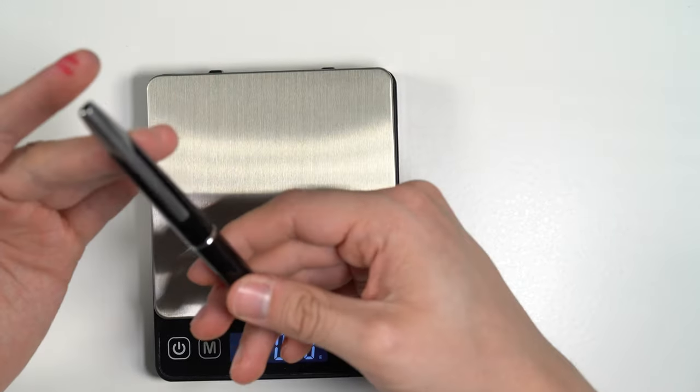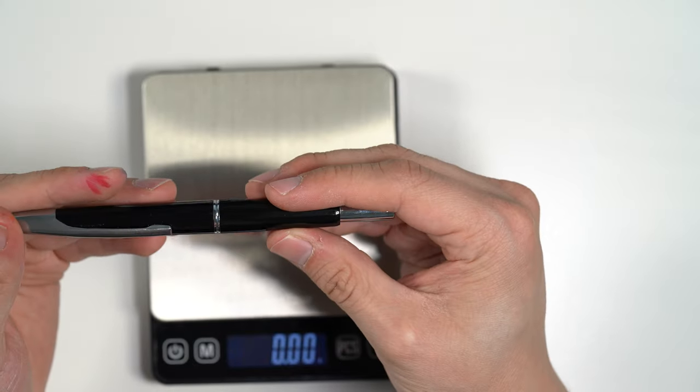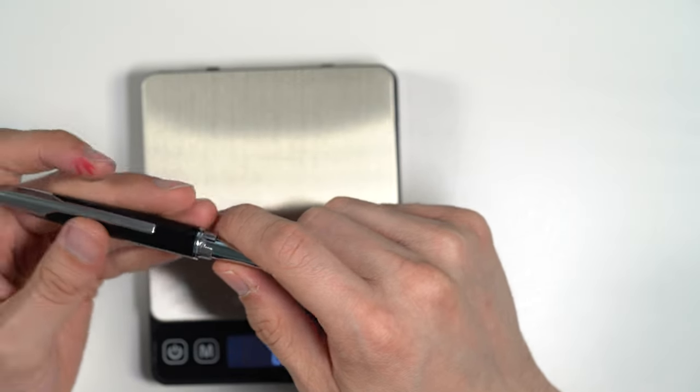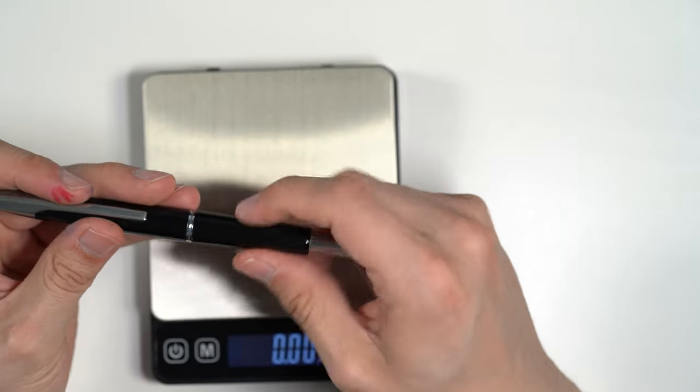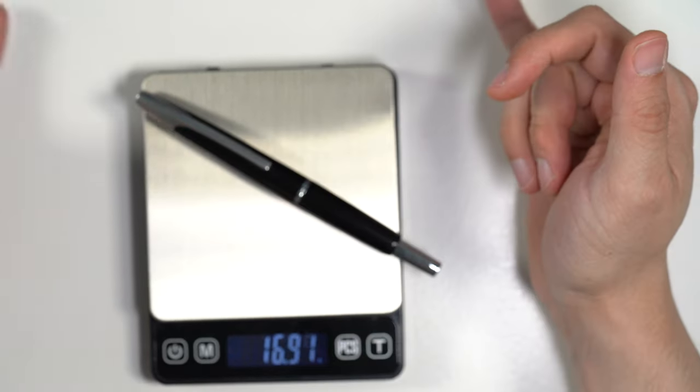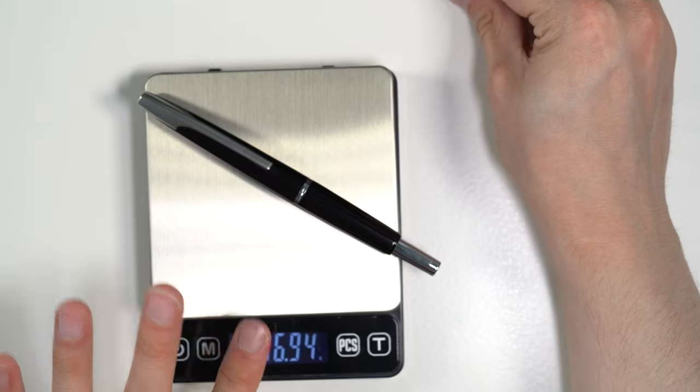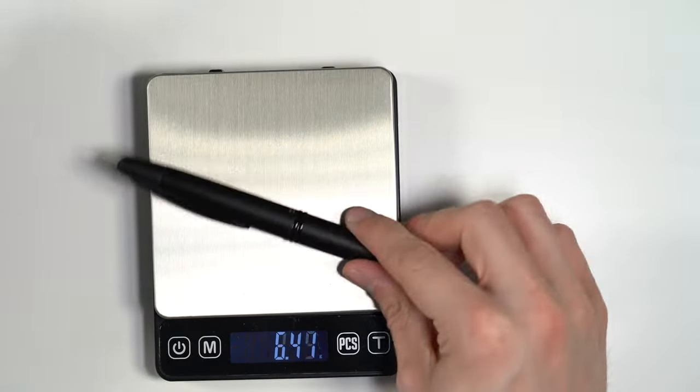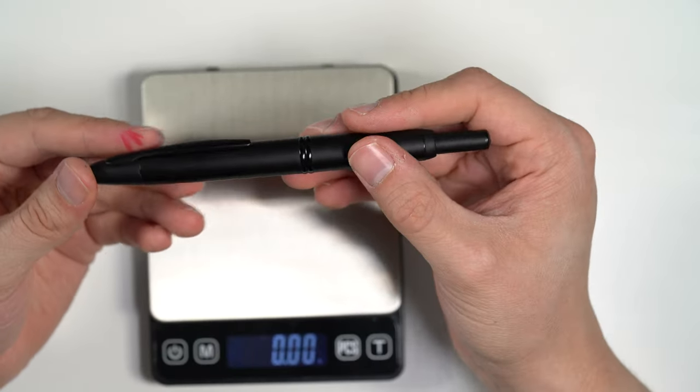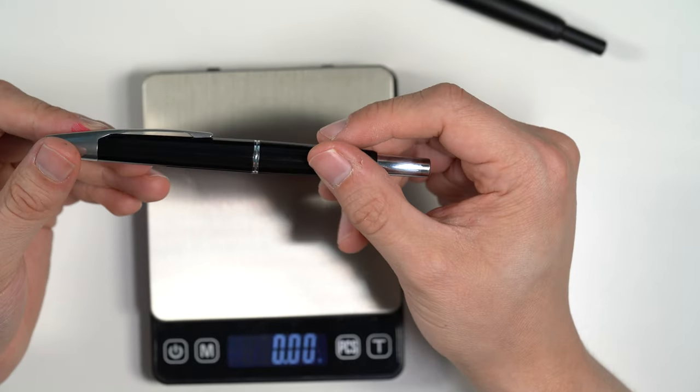As a comparison, this is a Namiki vanishing point, which is one of the older versions of the Pilot vanishing point. Nib and everything is interchangeable, and this is a plastic body pen. If you find the metal version to be too heavy, this one is essentially half the weight. So if you find that the current vanishing point is too heavy, it may make sense to try to find one of these Namiki ones.